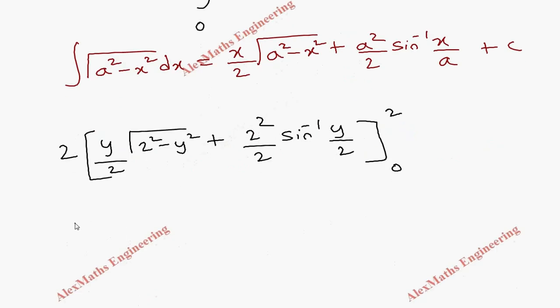When we substitute the upper limit, first term will become 0 and this will become 2 times sin⁻¹(1) which is π/2. For the lower limit both are 0. So totally after cancelling, we get 2π.